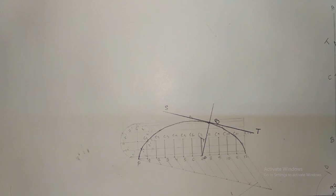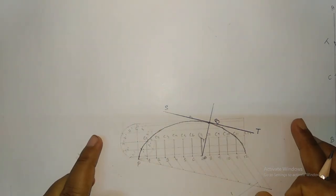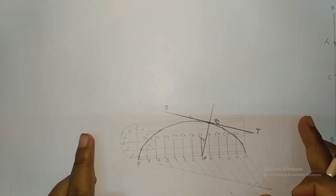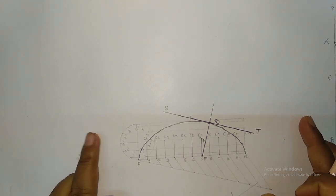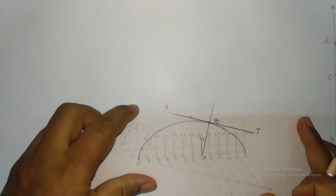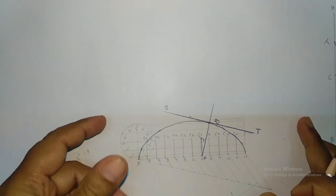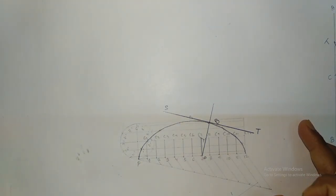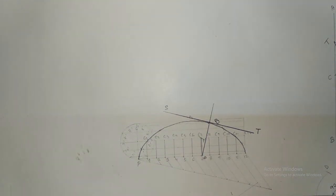I think you have understood the concept. When you are going to draw your diagram it should be larger — at that time you have to take a larger diameter, maybe 60 mm, so you have to take the diameter of 60 mm.